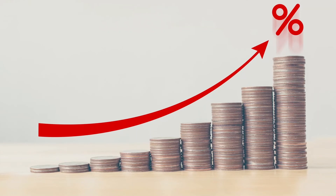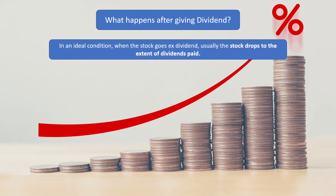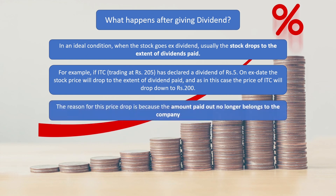Now we will discuss what happens after a company gives a dividend to its shareholders. In an ideal condition, when the stock goes ex-dividend, usually the stock price drops to the extent of the dividend paid. For example, if ITC is trading at Rs. 205 and has declared a dividend of Rs. 5, then on the ex-dividend date the stock price will drop to the extent of dividend paid — in this case, ITC's price will drop down to Rs. 200. The reason for this price drop is because the amount paid out no longer belongs to the company.